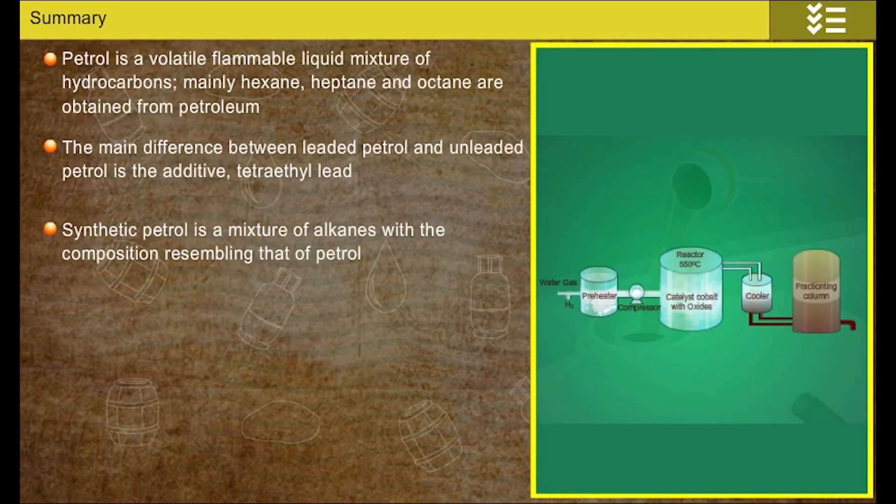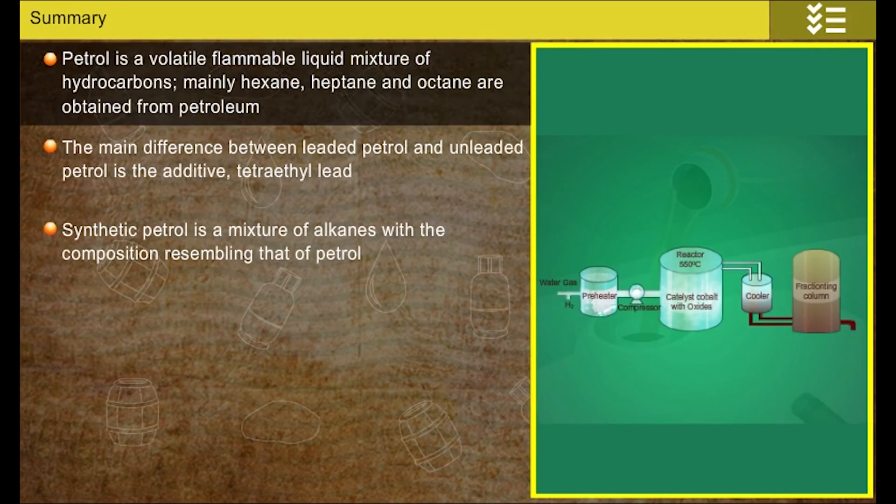Summary. Petrol is a volatile flammable liquid mixture of hydrocarbons. Mainly hexane, heptane and octane are obtained from petroleum.